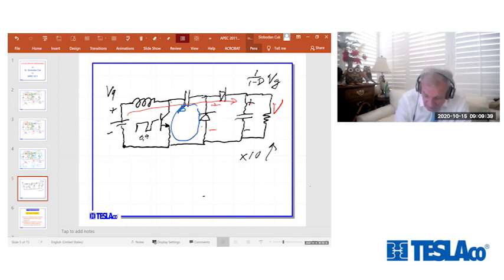And what happens is that now this is turned on and this point becomes the ground. So this is the voltage stress on this switch equal to the output voltage.